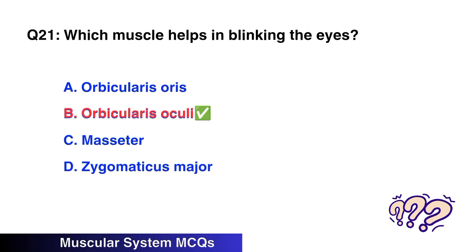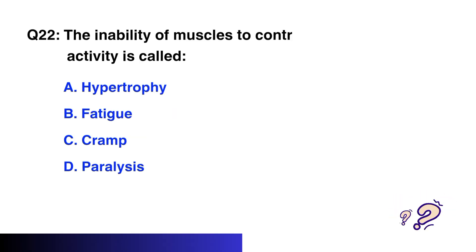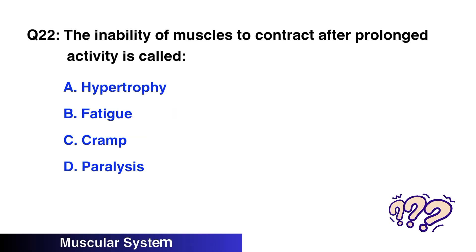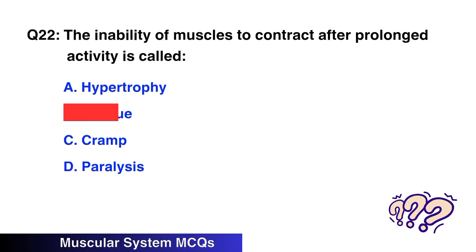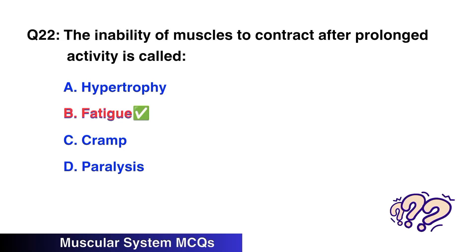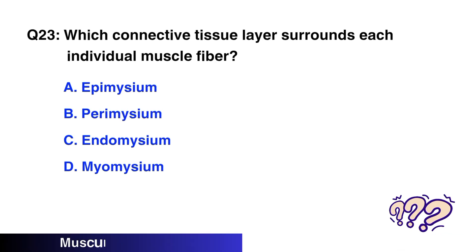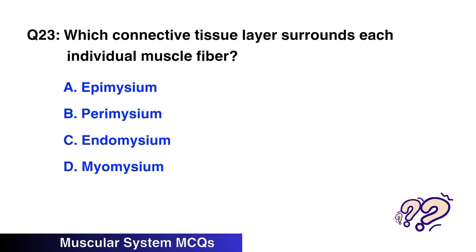Question No. 21: Which muscle helps in blinking the eyes? The right option is B: Orbicularis oculi. Question No. 22: The inability of a muscle to contract after prolonged activity is called — the right option is B: Fatigue.